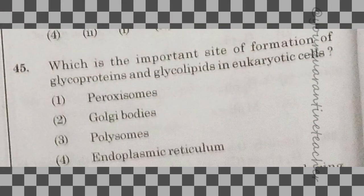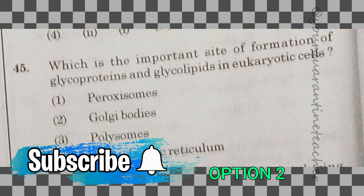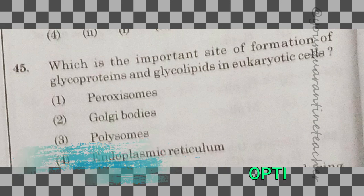45th question: which is the important site of formation of glycoproteins and glycolipids in eukaryotic cells? The answer is option 2 — Golgi body.